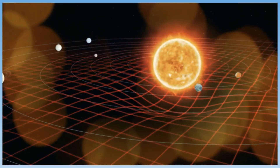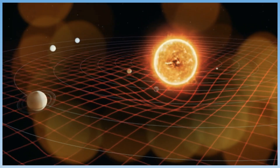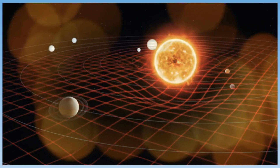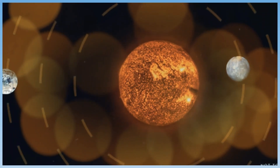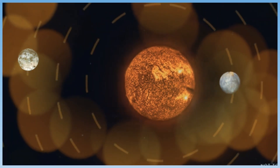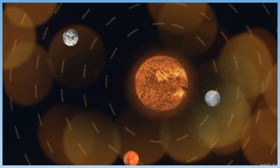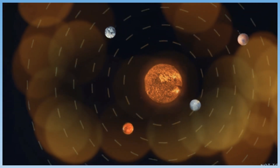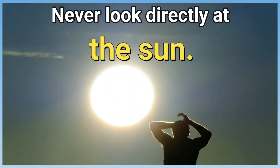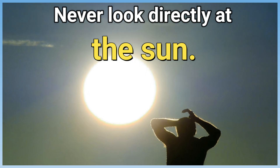Light and heat travel through space in waves. Some of those waves reach Earth. If you look directly at the sun, its light is so intense that it will damage your eyes. Never look directly at the sun.